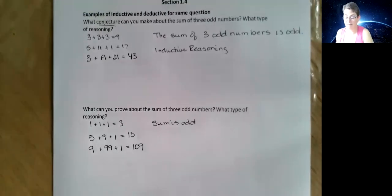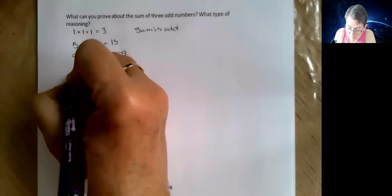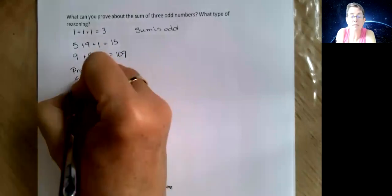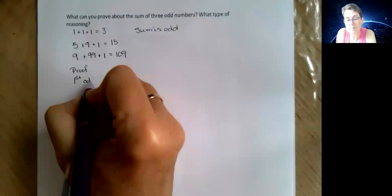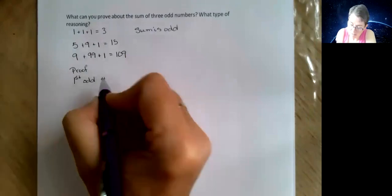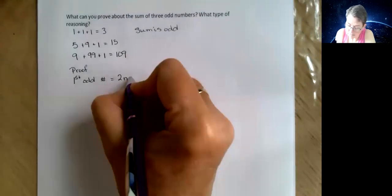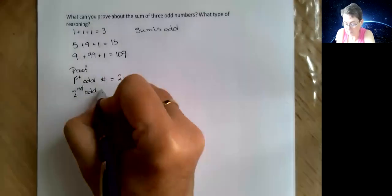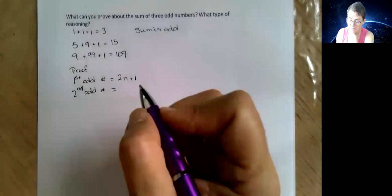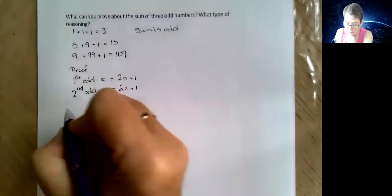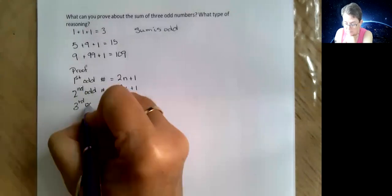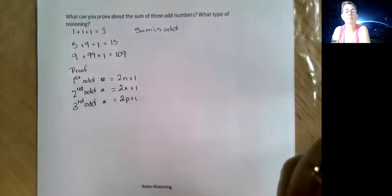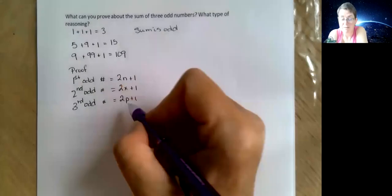So the proving part. All right, so first odd number, let's go 2n plus 1. Not consecutive, so whatever letter you want: 2x plus 1, 2p plus 1. Whatever variables you want, as long as they're not the same.